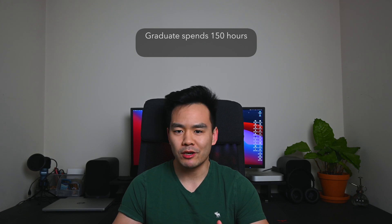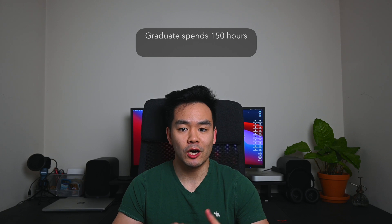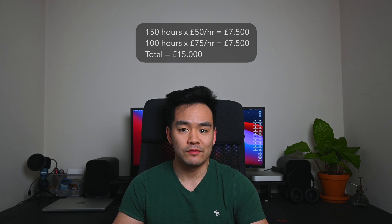As the senior, you're in charge of fees and allocating time. You look at the drawings and work and make a good guesstimate of how long certain tasks will take. Let's say the graduate needs 150 hours for initial calculations and designs, and you as the senior will spend 100 hours on meetings, concept work, and sketches. To work out the fee for this stage, you multiply hourly rate by hours: 150 × £50 plus 100 × £75, which comes to £15,000.